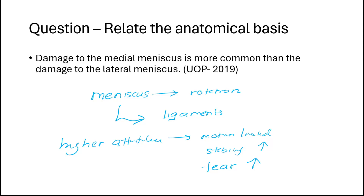To summarize: damage to the medial meniscus is more common than to the lateral meniscus because the medial meniscus is in close proximity to the tibial collateral ligament and sartorius muscles. It is fixed in a more stable manner to the ligaments and muscles, limiting its motion. When the knee is subjected to rotation, there is a higher propensity for tears at the medial meniscus. The lateral meniscus is more protected because the popliteus pulls it backward, preventing damage from awkward rotations.